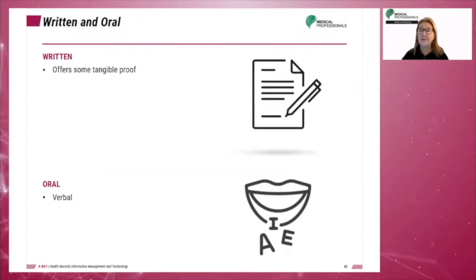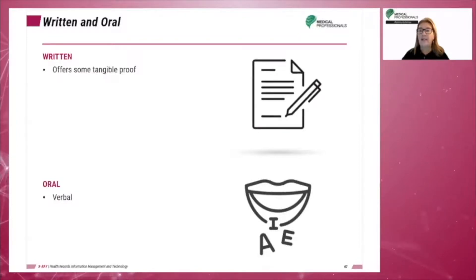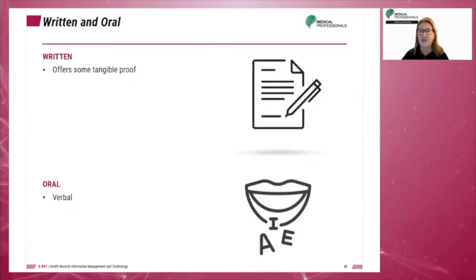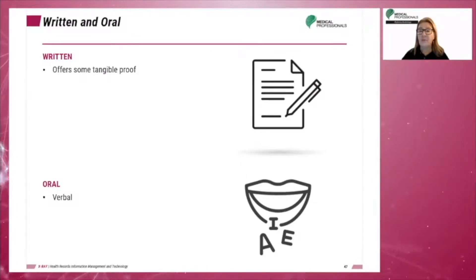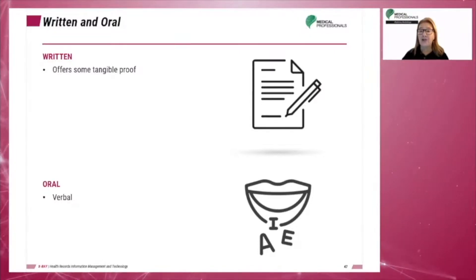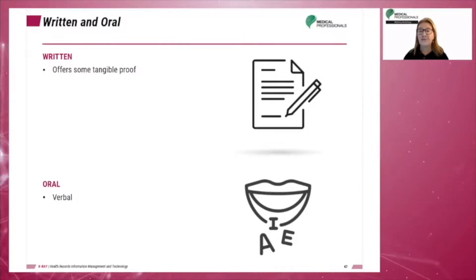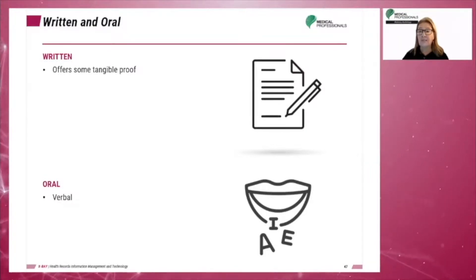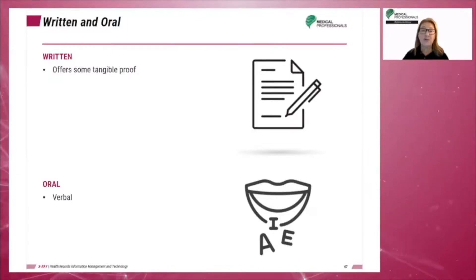The authorization for treatment document does not give authorization to perform invasive procedures. There are different types of informed consent, and consent can be given in writing or verbally. If a patient's consent is written, it should include the name of the healthcare professional who discussed the proposed treatment with the patient, the name of the provider who will perform the procedure, and the date, time, and location where the consent was signed. Written consent offers tangible proof if other facts indicate the patient did not fully understand what signing meant in relation to their medical care.